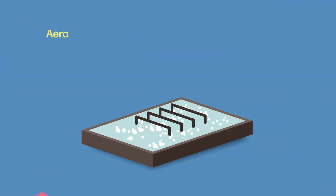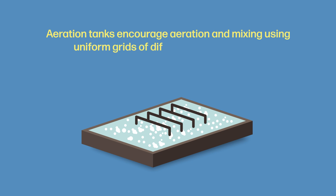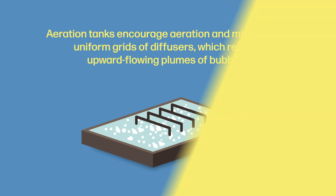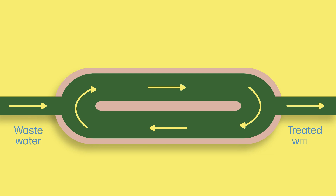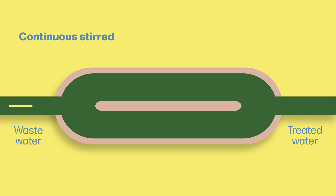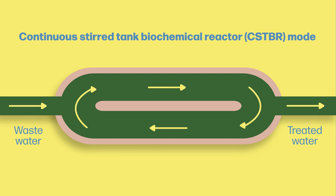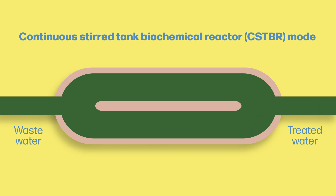In contrast, aeration tanks encourage aeration and mixing using uniform grids of diffusers which release upward flowing plumes of bubbles. In each type of tank, organic pollutants are broken down most efficiently in the Continuous Stirred Tank Biochemical Reactor, or CSTBR, mode — an ideal case where wastewater is constantly being fed in and treated water fed out without any pause.